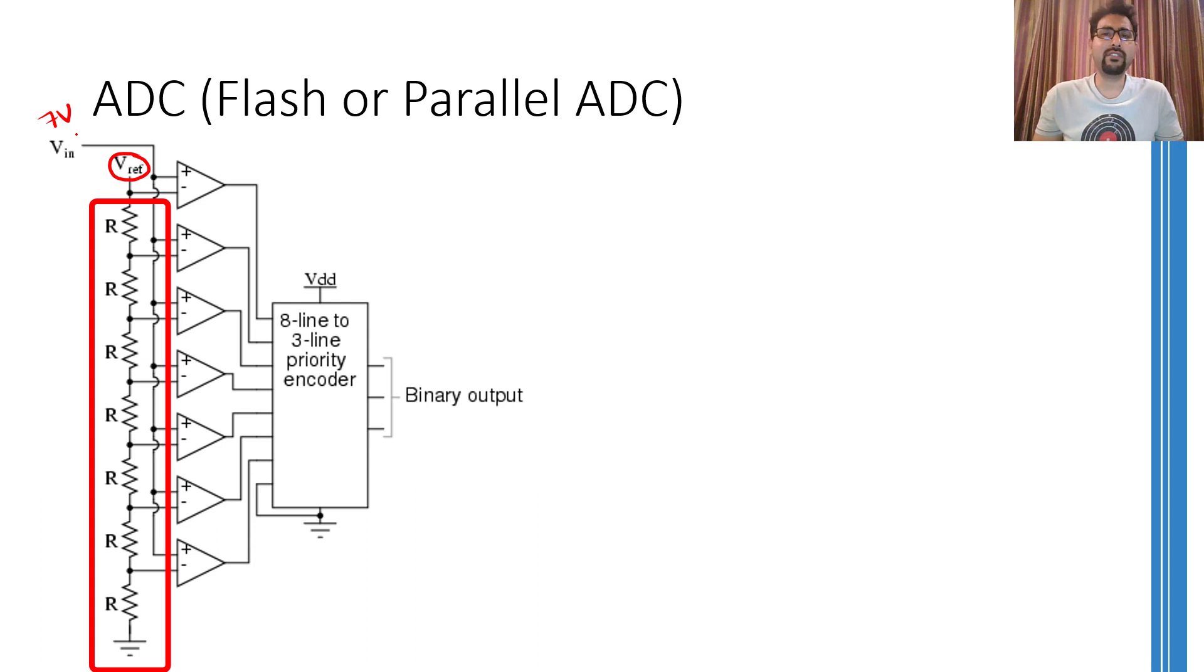The simple series connection of these 7 resistors will divide the V reference into 7 equal voltages. That is, at this place you are going to see 7 volts. Over here you will have 6 volts, then 5, 4, 3, 2, and 1.